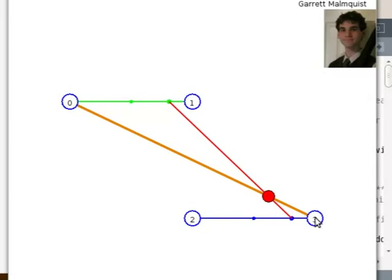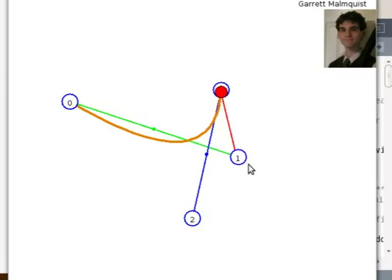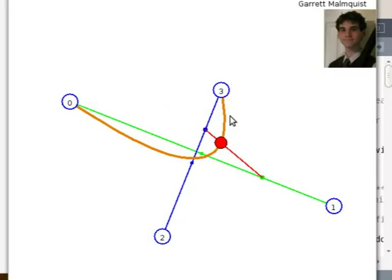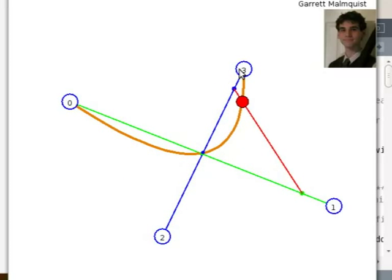But if you move them like this, so they're crossing, the behavior gets more interesting. Because now, to keep with the percentages, it ends up actually creating a perfect parabola.